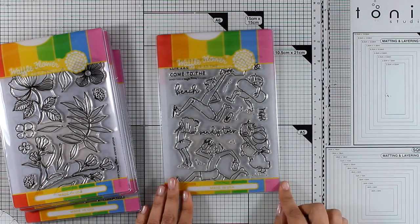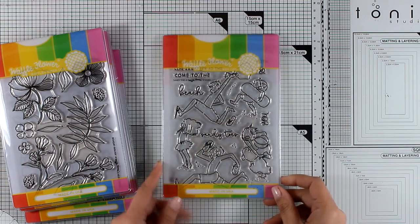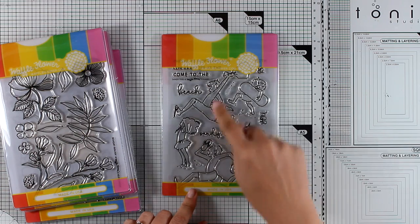First, let's start with my favorite from this release. This is called Sandy Toes. It gives you five different characters, these are actually kids, boys and girls, who are playing by the sea.